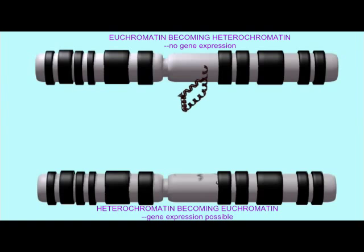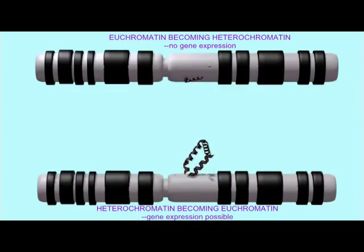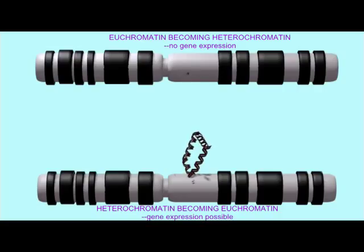Other regions of the genome are facultative heterochromatin. They are sometimes too tightly packed to allow transcription and in the form of heterochromatin, while at other times they are more loosely packed in the form of euchromatin, allowing transcription.